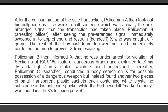After the consummation of the sale transaction, Policeman A took out his cell phone as a pre-arranged signal that the transaction had taken place. Policeman B, the arresting officer, after seeing the signal, immediately swooped in to apprehend and restrain X. The rest of the buy-bust team cordoned the area to prevent X from escaping. Policeman B informed X that he was under arrest for violation of Section 5 of RA 9165 and explained his Miranda rights. Policeman C, the searcher, conducted a body search and found two more small transparent plastic sachets containing white crystalline substance in X's right side pocket, while the 500-peso marked money was found in his left side pocket.